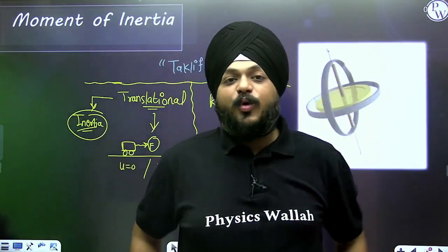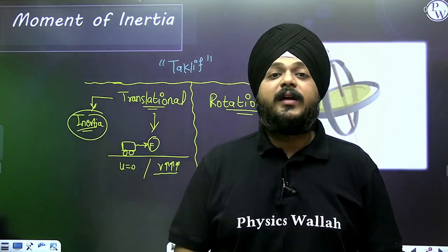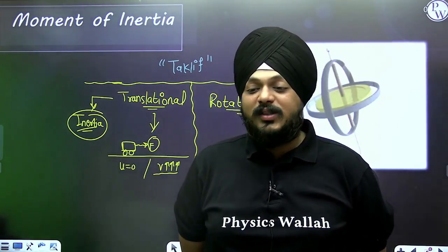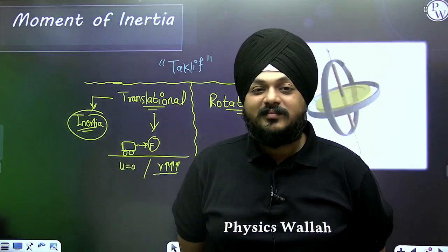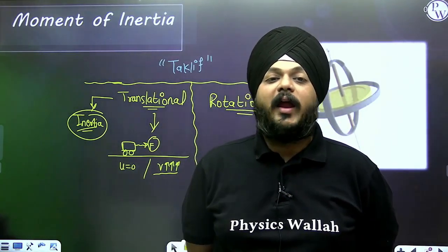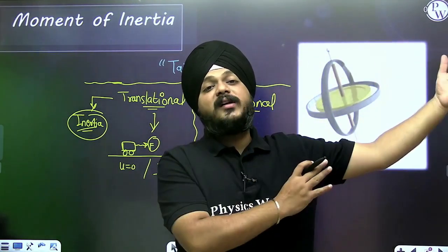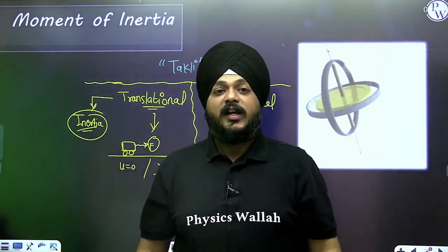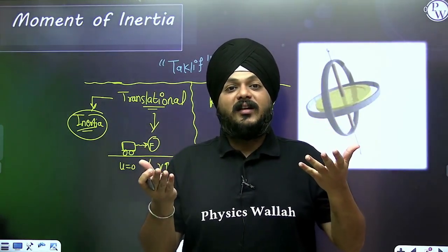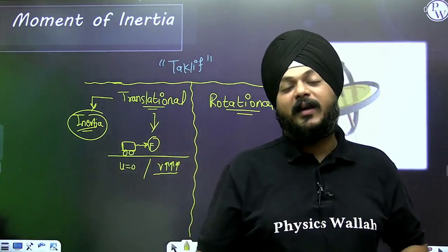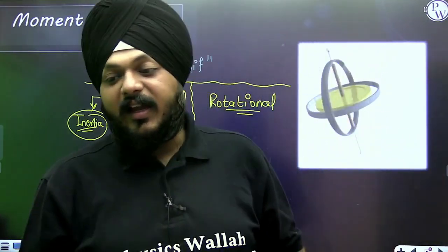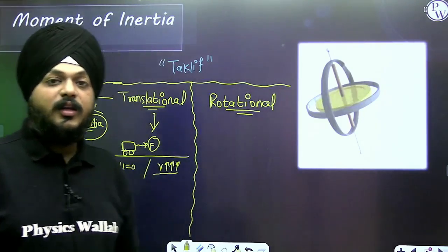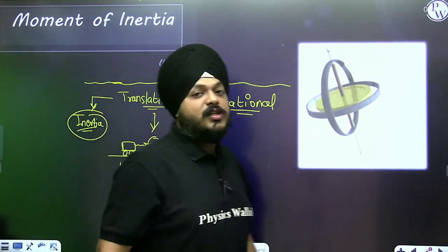Let me compare translational motion and rotational motion. For translational motion: inertia is all about it. Consider an object initially at rest (u = 0); due to some external force, it starts moving with velocity v. The object wants to stay in its older state of rest, but due to the external force it has to change its state. The internal property of matter that resists this change is inertia.